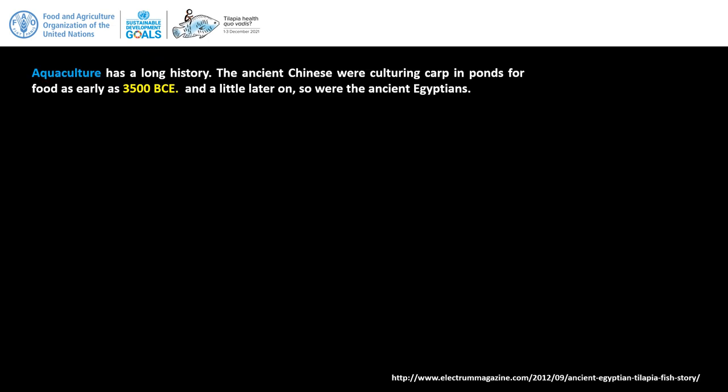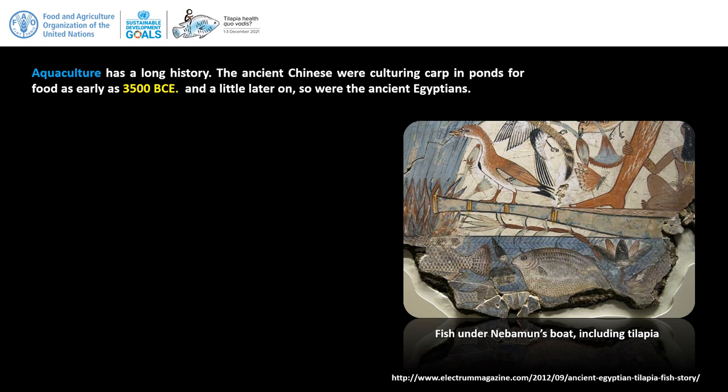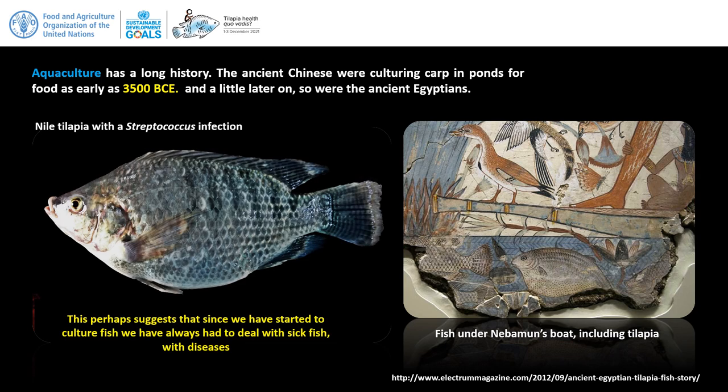Aquaculture has a long and rich history. The ancient Chinese were culturing carp in ponds for food well over 5,000 years ago, and a little later so were the ancient Egyptians. In the tomb of Neberman, a middle-ranking scribe near Luxor, there are paintings showing a fish which appears to be a tilapia with a large belly, very similar to a tilapia with streptococcus infection. For as long as we have been growing fish, we've also had to deal with sick fish and their diseases.